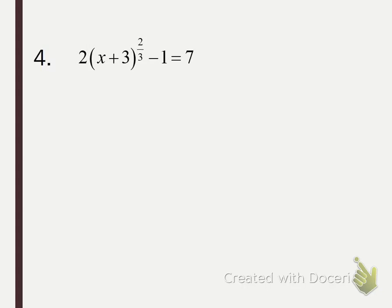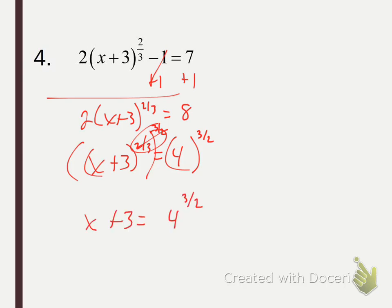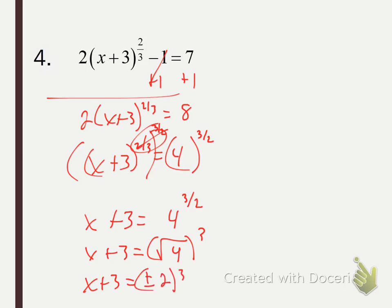Next one: again, I want to get whatever's being raised to that rational exponent all by itself. So here we've got to add 1, then divide by 2. Now that two-thirds exponent is by itself. We want to raise both sides to the reciprocal — the three-halves power — so those multiply out to 1. We get x plus 3 equals 4 to the three-halves power. Rewrite that as the square root of 4 to the third power. Since we're even-rooting, our solution must include plus or minus. This gives us plus or minus 2 to the third power.